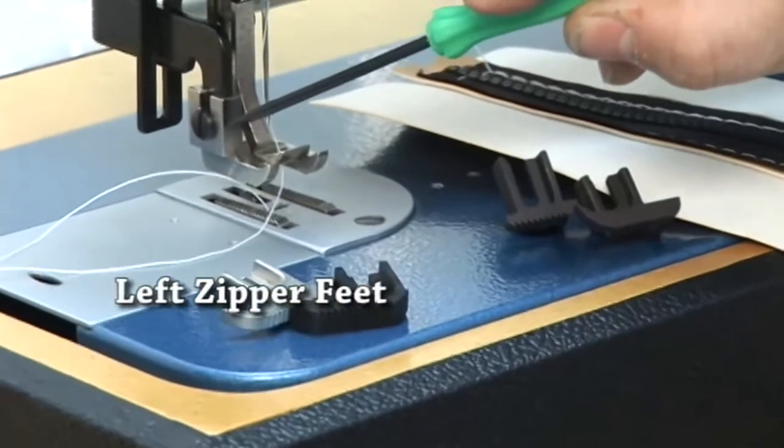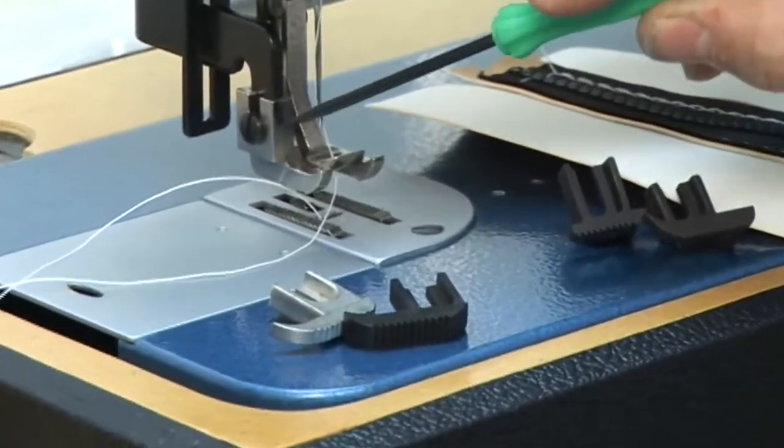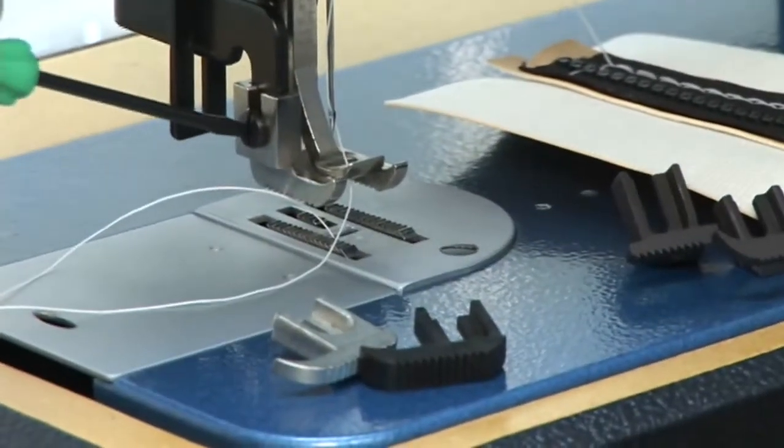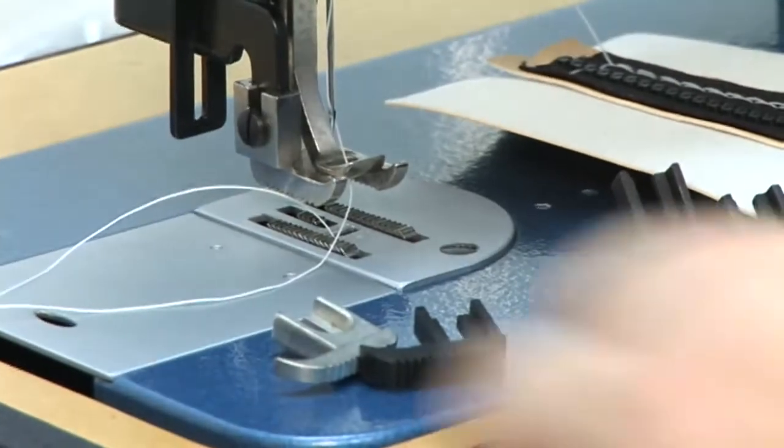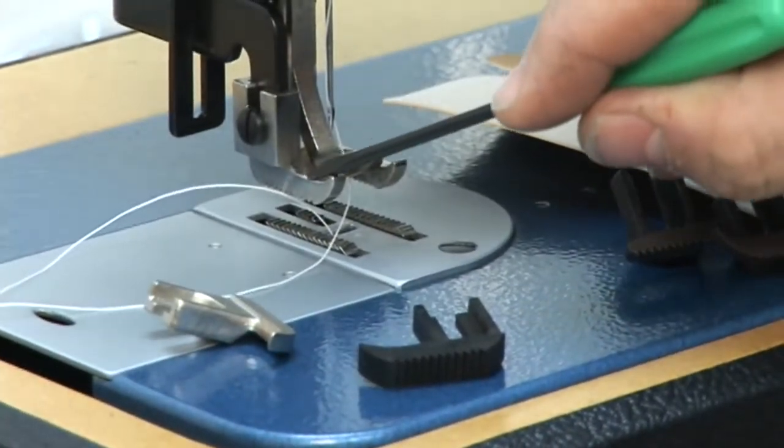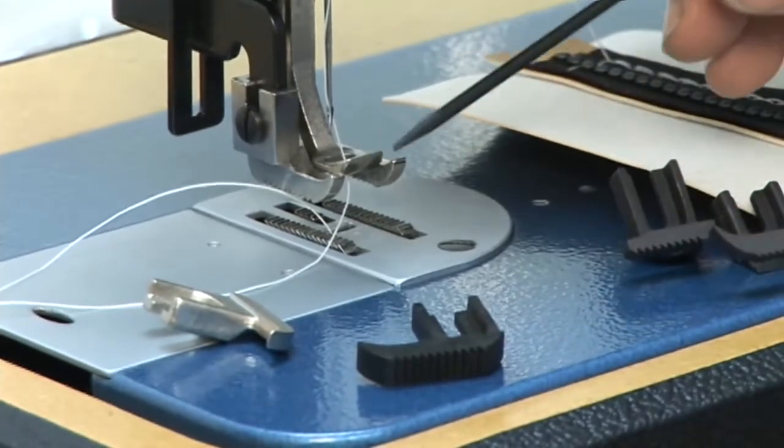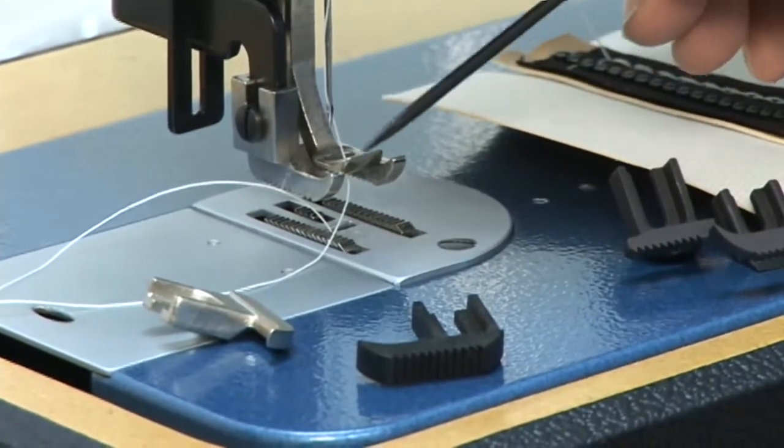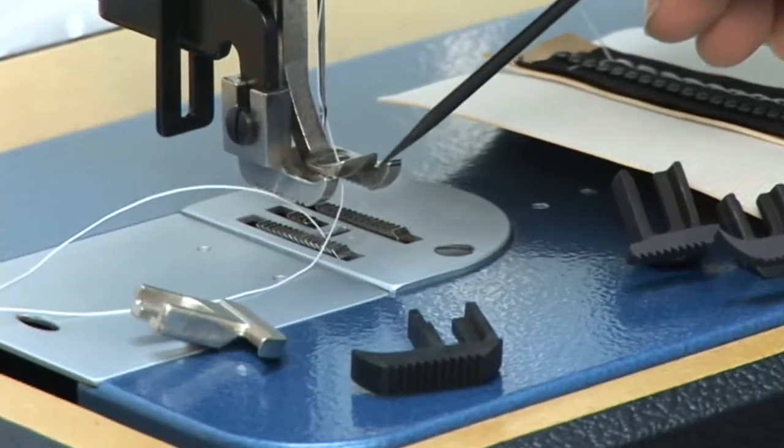If you were to replace the outer foot on the machine, the walking foot, by loosening this screw you could put, in this case, this foot on the machine and it would only give you a toe to the left side of the center foot. So this foot, this toe over here on the right would be gone.